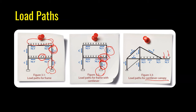For a cantilever canopy with a UDL applied, the load transfers downward. One part of the structure is in tension as it tries to stretch and transfers load upward, while another part transfers load downward and leftward. The columns experience compression, as does the horizontal beam, but one column may be in tension. It is very important to understand which members are in tension, compression, shear, or moment.